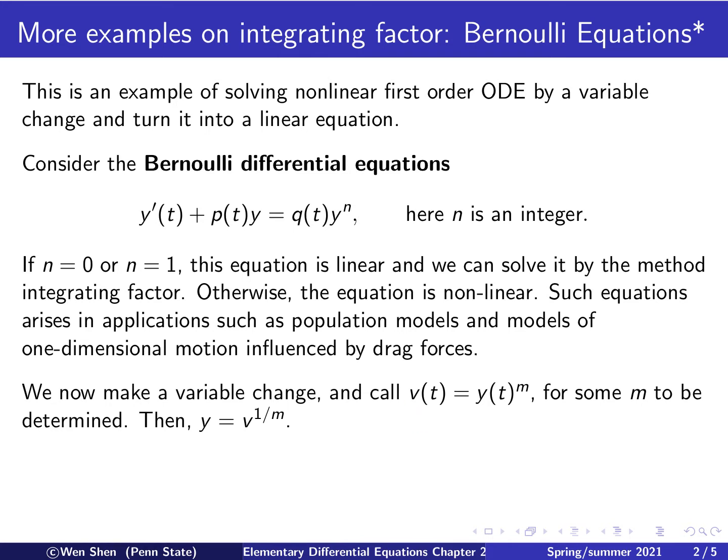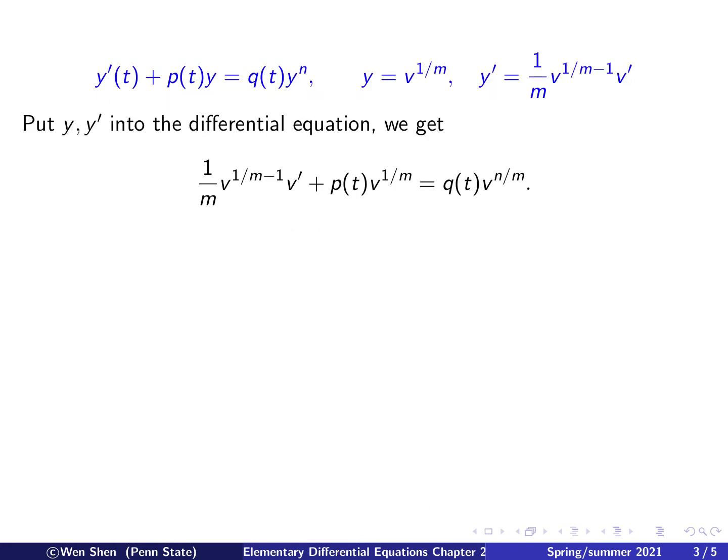This power m is to be determined. So with this choice, then we know y equals v to the power 1 over m as the inverse function. And since in the equation we have the y prime term, then we will differentiate y and we apply the chain rule. So y prime will equal to 1 over m, v to the power 1 over m minus 1 times v prime.